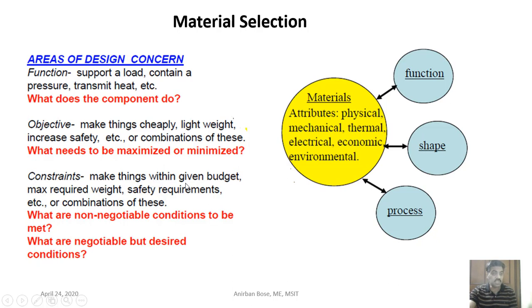There are certain constraints — making things within a given budget, maximum required weight, safety requirements, etc. These are like non-negotiable conditions; you have to maintain these constants and then design and select the material. You cannot step outside these constraints.